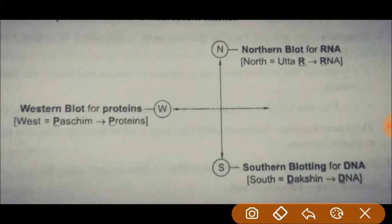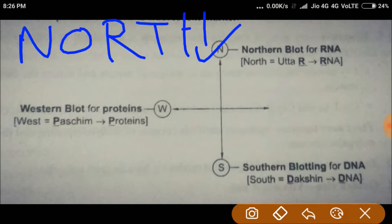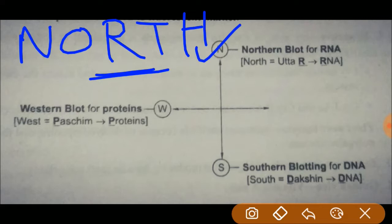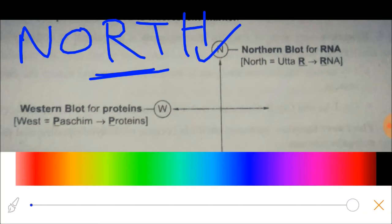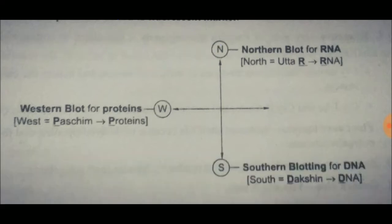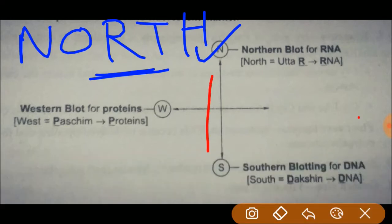Now let's see how we can remember different kinds of techniques. Let's start with northern blotting. For remembering northern blotting, it is very simple — 'north' contains the letter R, and RNA also contains R. So northern blotting is related with RNA.